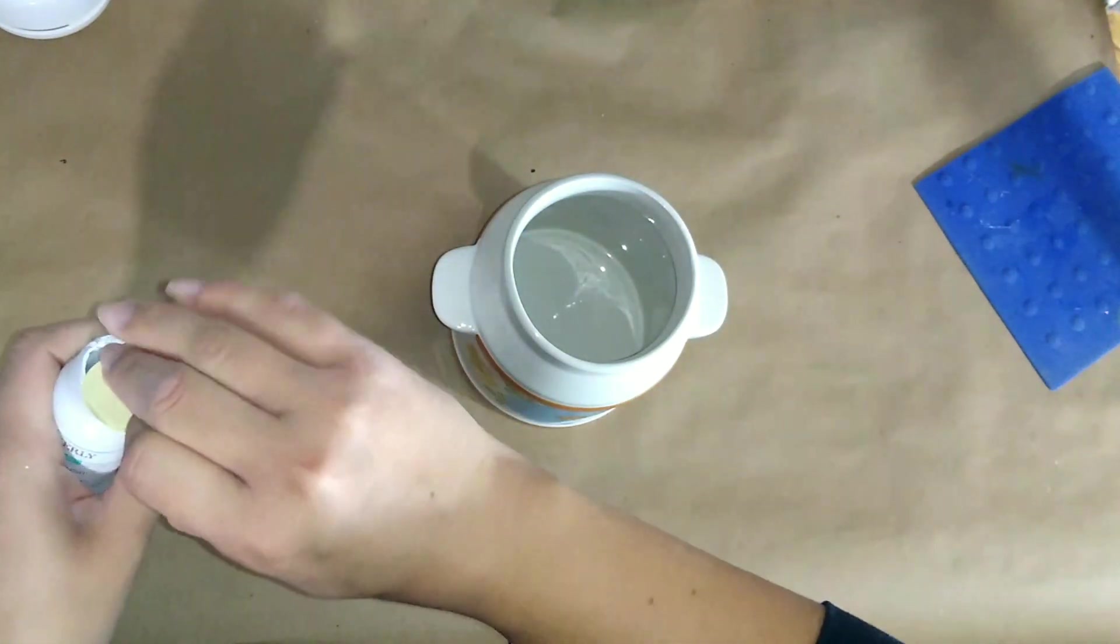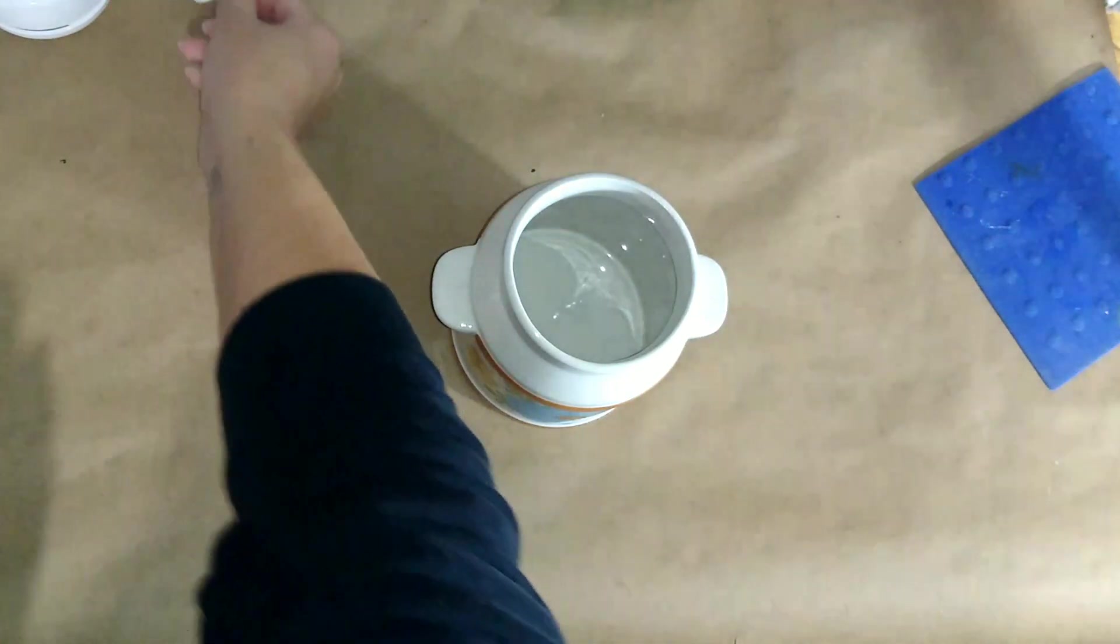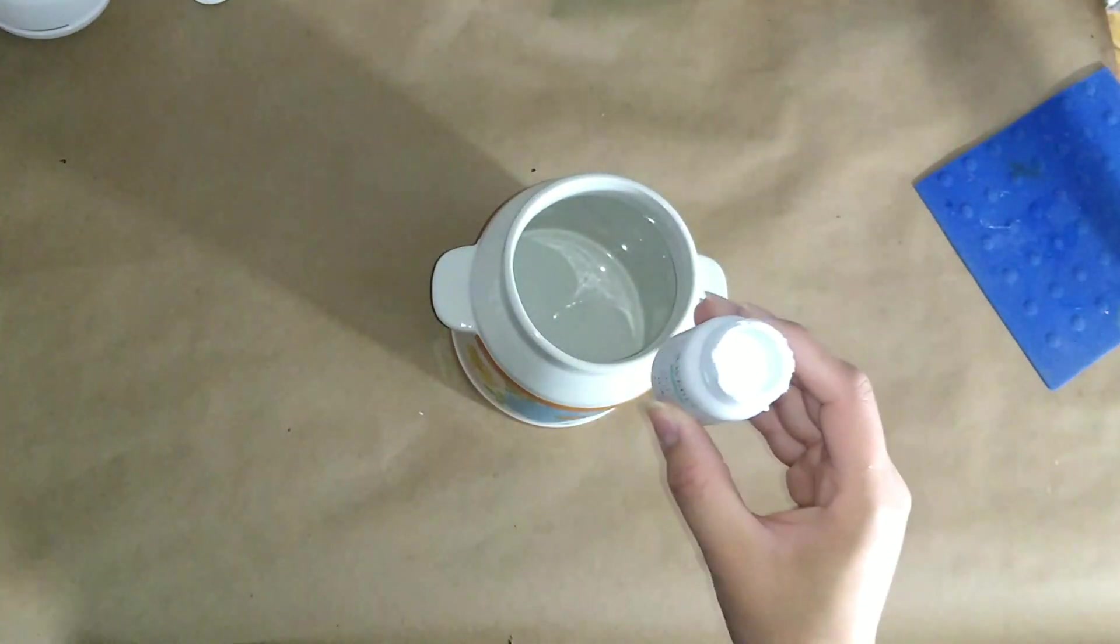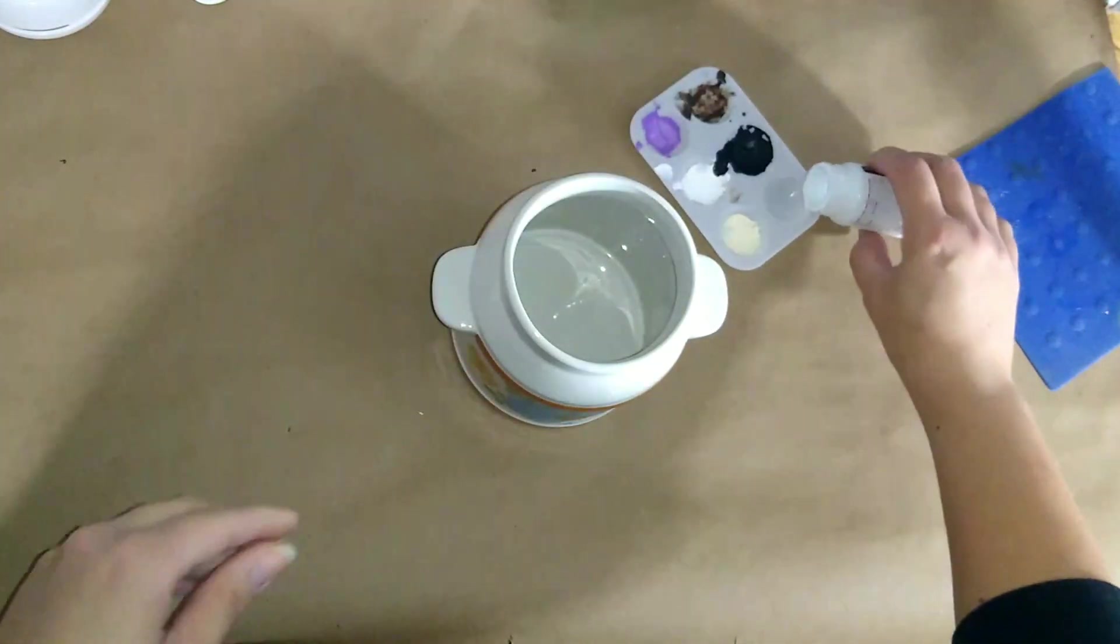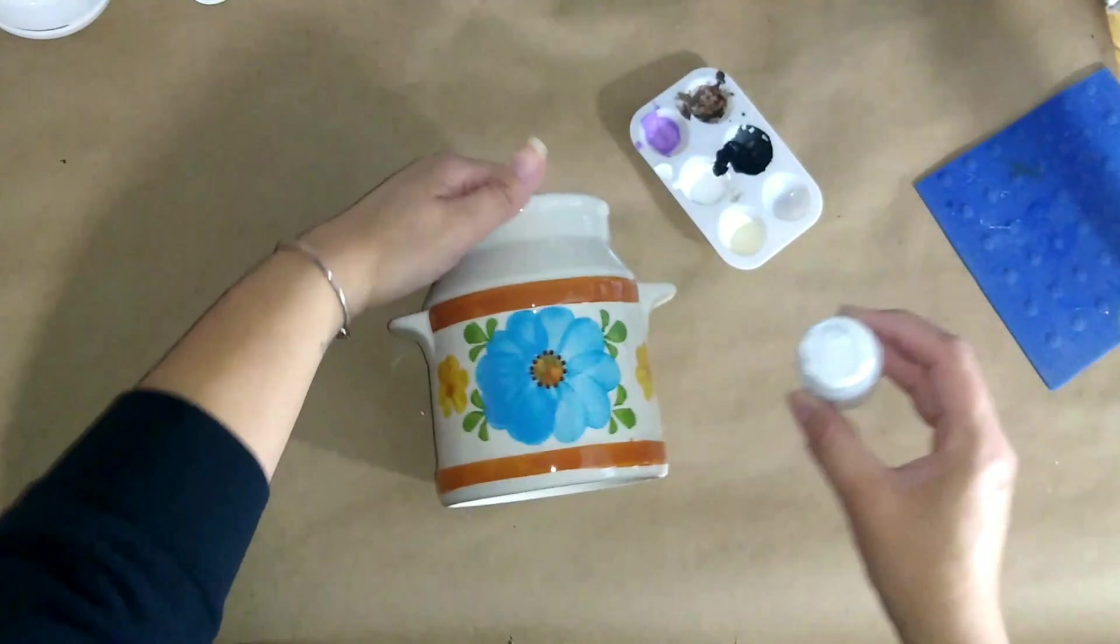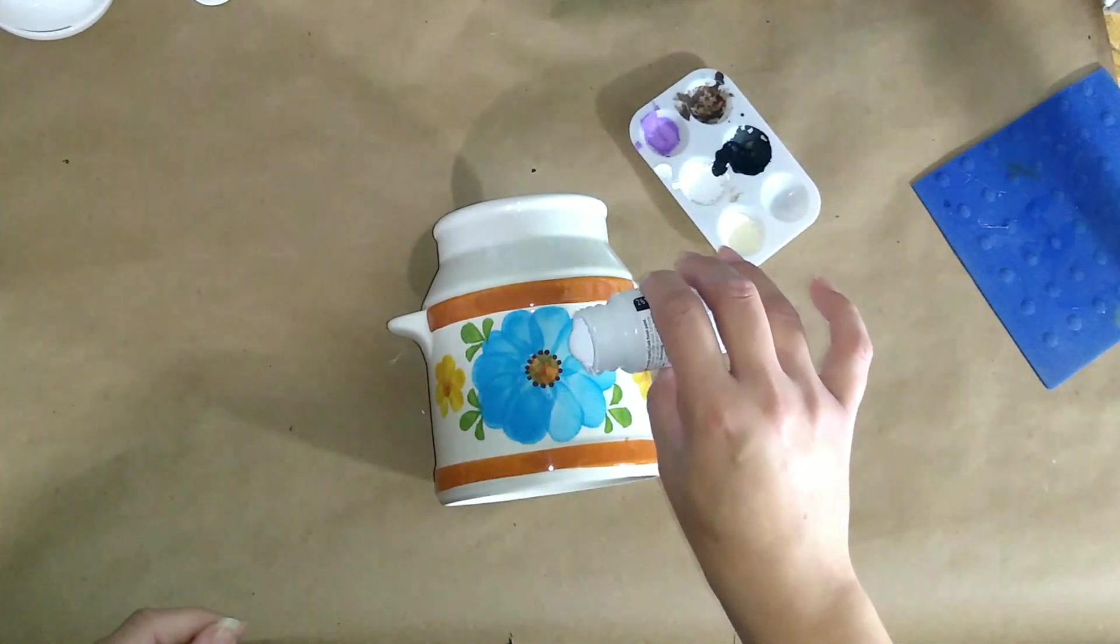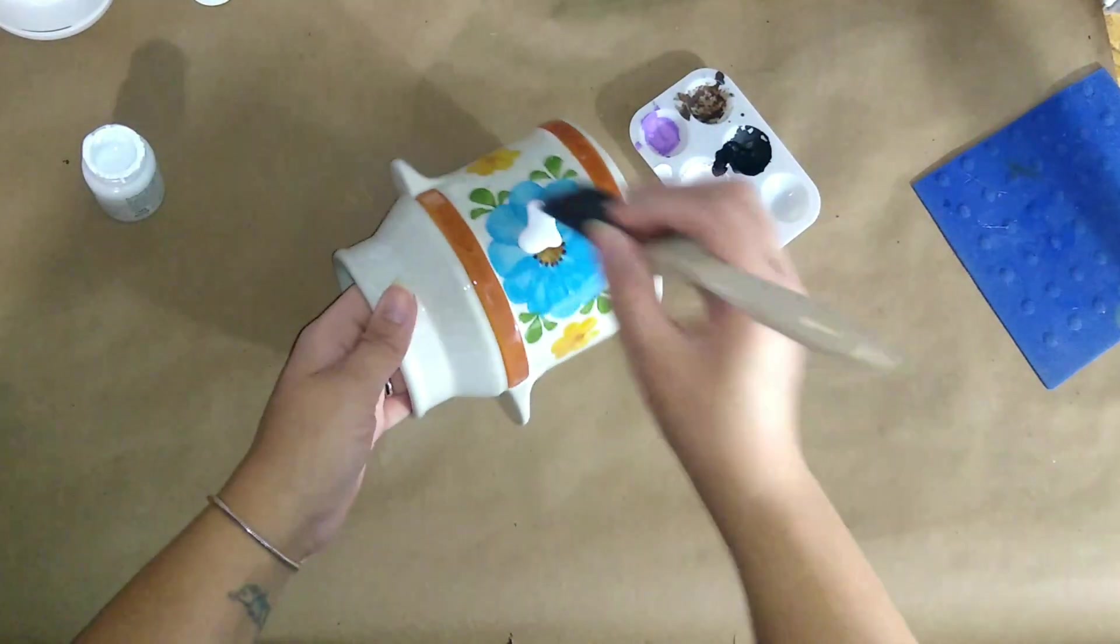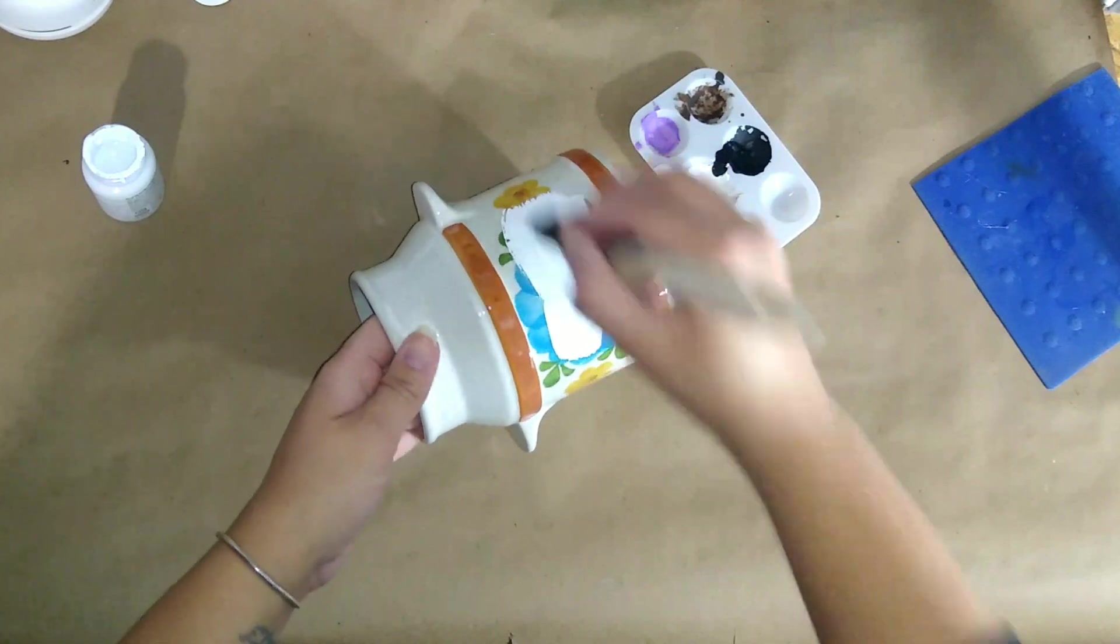With the gesso you just give it a coat and then you let it sit overnight, and then you paint over it. That allows it to adhere better and gives it a smoother finish. But I did not have any gesso so I couldn't do that.